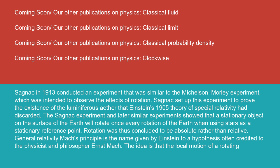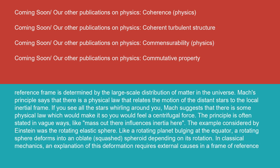General relativity Mach's principle is the name given by Einstein to a hypothesis often credited to the physicist and philosopher Ernst Mach. The idea is that the local motion of a rotating reference frame is determined by the large-scale distribution of matter in the universe. Mach's principle says that there is a physical law that relates the motion of the distant stars to the local inertial frame.